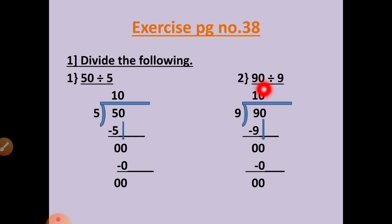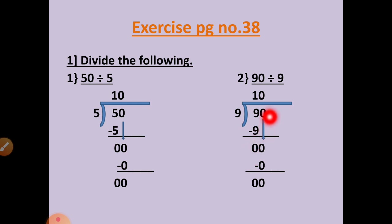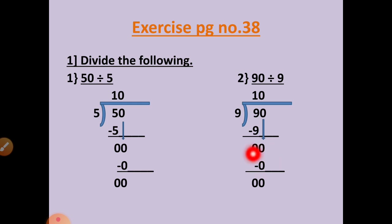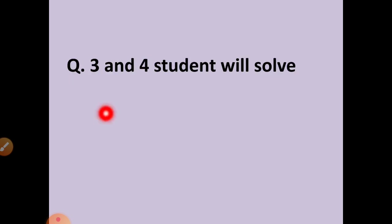Question number 2: 99 divided by 9. 9 ones are 9. 9 minus 9 equals 0. Copy this 0 down. 9 zeros are 0. 0 minus 0 equals 0. Question number 3 and question number 4 you will solve.